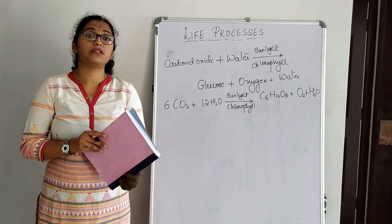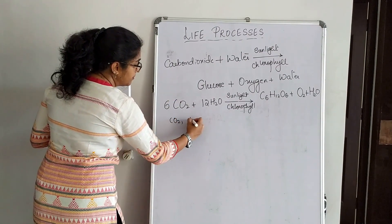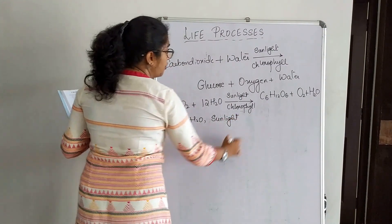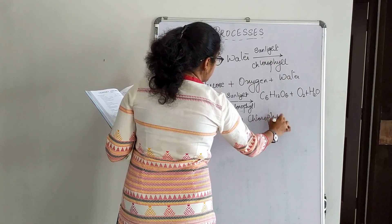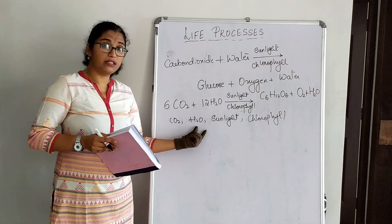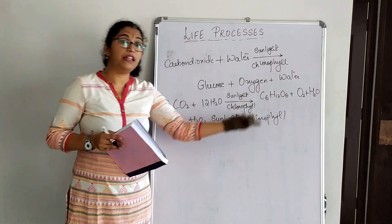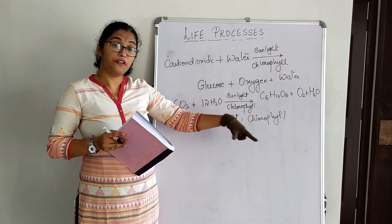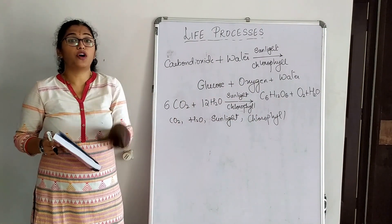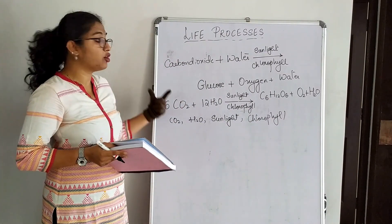There are some raw materials required in photosynthesis: carbon dioxide, water, sunlight, and chlorophyll. Carbon dioxide is inorganic material, water is inorganic material, and sunlight is also inorganic. The role of chlorophyll in the plant or in the leaves is to absorb sunlight. Now, what is the main site of photosynthesis? Not the whole green plant — green leaves are the main site of photosynthesis.